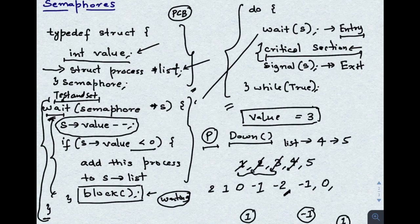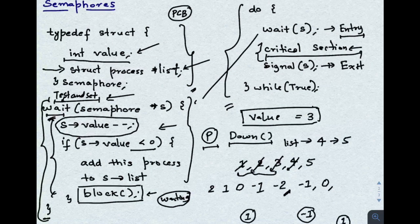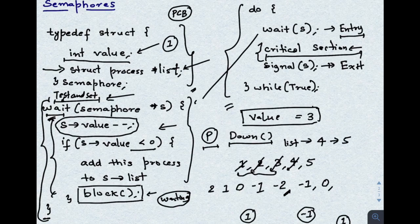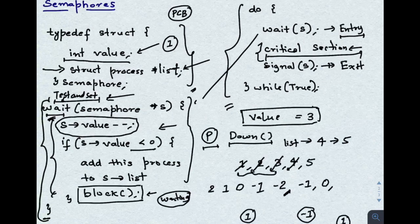Mutex is very simple: if the value of the semaphore is one, then that semaphore is called a mutex. It's named mutex because when the value is one, it is used for mutual exclusion. Once the value becomes zero, no process can enter; the next process makes it minus one and must wait. So mutex is a semaphore with a value of one.